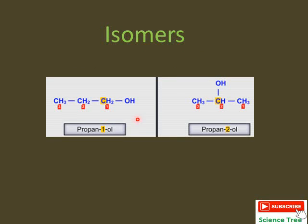Now in this case, the functional group is changing its position. We have 3 carbons, so it is propane. As it has a functional group of alcohol, it will change into propanol. In the first isomer, the hydroxyl group is attached with carbon number 1. While in the second isomer, the alcohol group is attached with carbon number 2. In this way, the total molecular formula will not change — it will remain the same, because the number of carbon atoms, hydrogen atoms, and oxygen are not changing in both isomers. What is changing is only the position of the functional group. This is position isomerism.